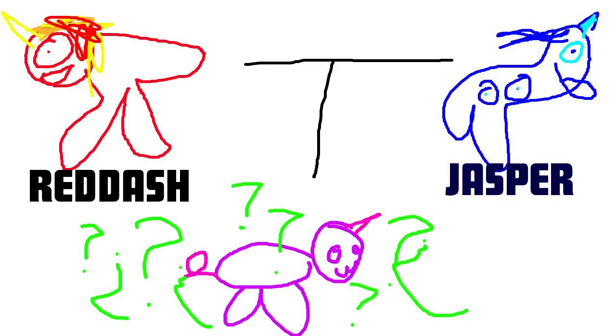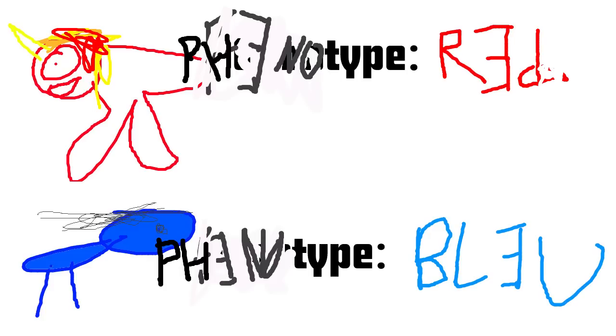Well, first we take a look at the phenotype and we can say that Red Dash is red and the Blue Pony is blue.